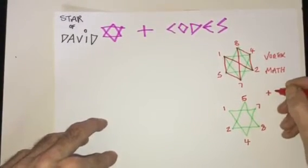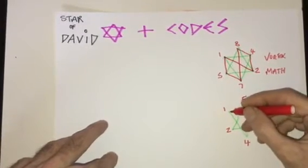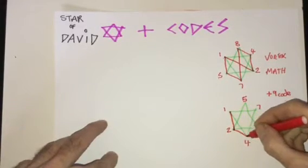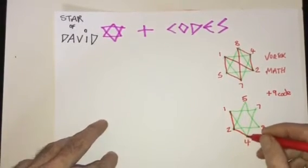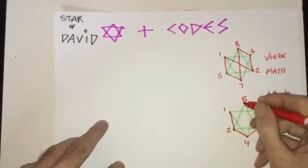Now once again, we add the nine code. Which is one, and the two, going back to the two, to the four, to the eight, to the seven, to the five, and we're back to the one.